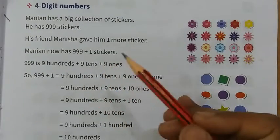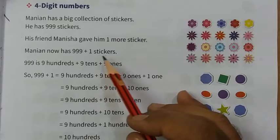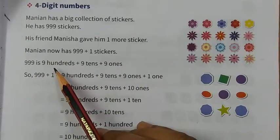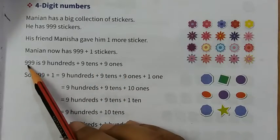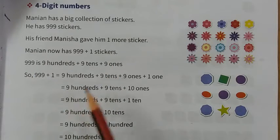There were 999 already and one sticker Manishah gave him. So how many stickers we have? Now look at 999. How can we write? 900, 910 and 9. 900, 910 and 9.